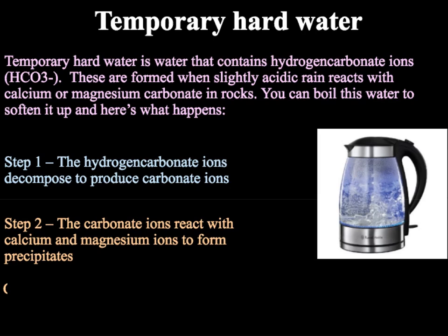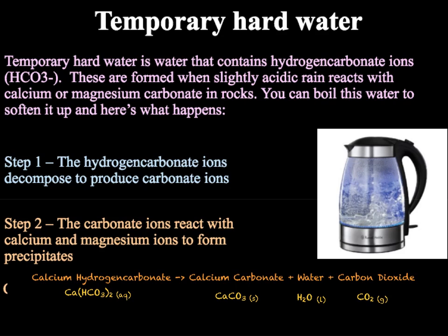When we boil temporary hard water: step one, the hydrogen carbonate ions decompose to produce carbonate ions — they go through a thermal decomposition, as we have previously looked at in C2. These carbonate ions then react with the calcium and magnesium ions to form precipitates. The overall reaction for calcium hydrogen carbonate: Ca(HCO₃)₂ reacts to form calcium carbonate, water, and carbon dioxide. However, this calcium carbonate precipitate is the limescale that forms inside the kettle — it is an insoluble salt that can cause large amounts of damage over time.